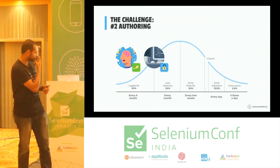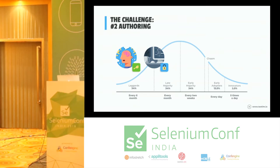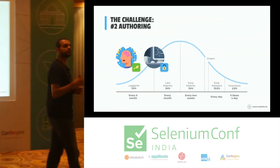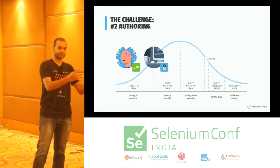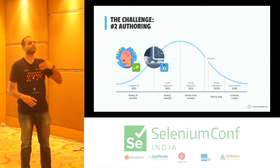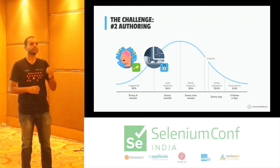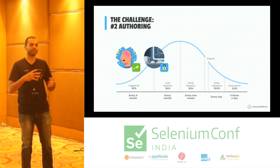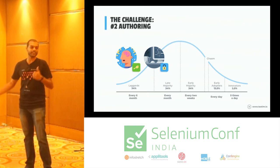The late majority — those releasing every month — face the challenge of authoring. These organizations have testers who start writing tests but fail to pay attention to good automation practices like reusability, low coupling, and parametrization. They fail to realize this, and because of that there are a lot of problems when releasing once a month.